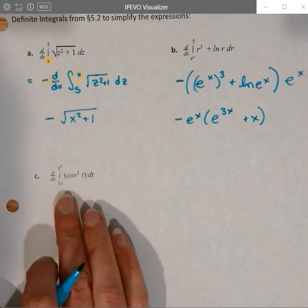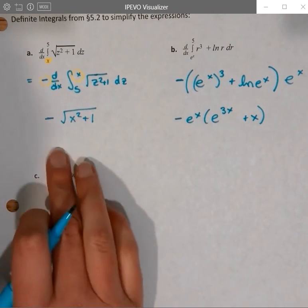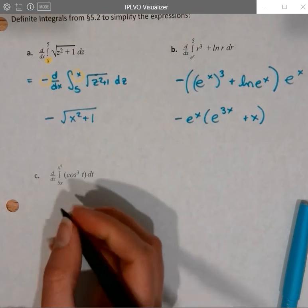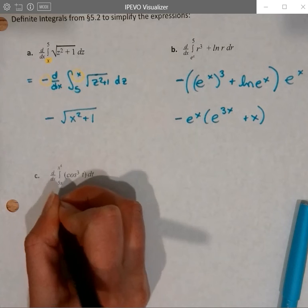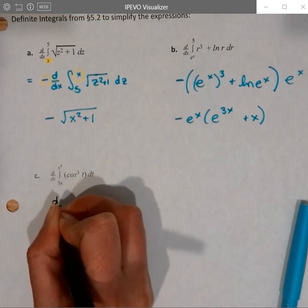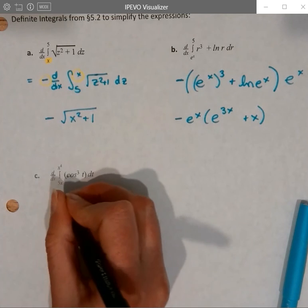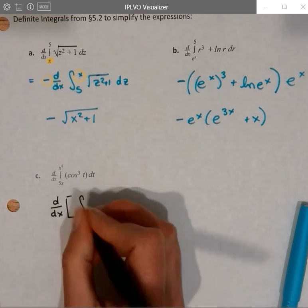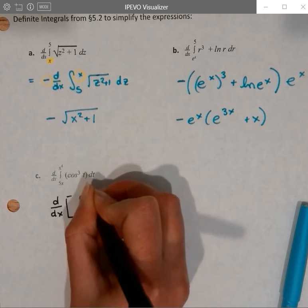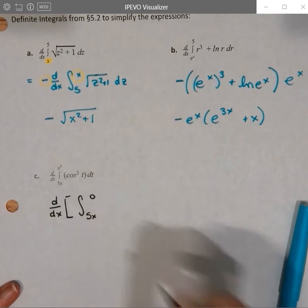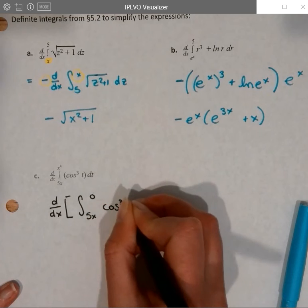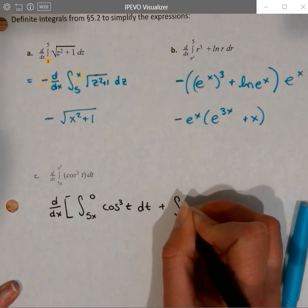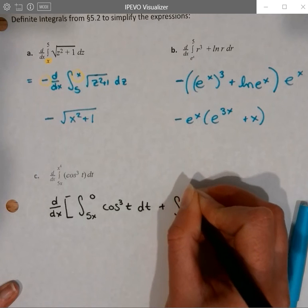And the last one. This one has a variable in both parts. The Fundamental Theorem of Calculus does not allow for that, but we can separate it at any arbitrary value. Remember that the value doesn't even need to be between them. So we can separate this into the derivative of the integral from, say, 5x to 0, any value. You could put 300 there. It doesn't matter. You're just separating it at numeric value and then adding on the integral from that same numeric value to x to the 4th.